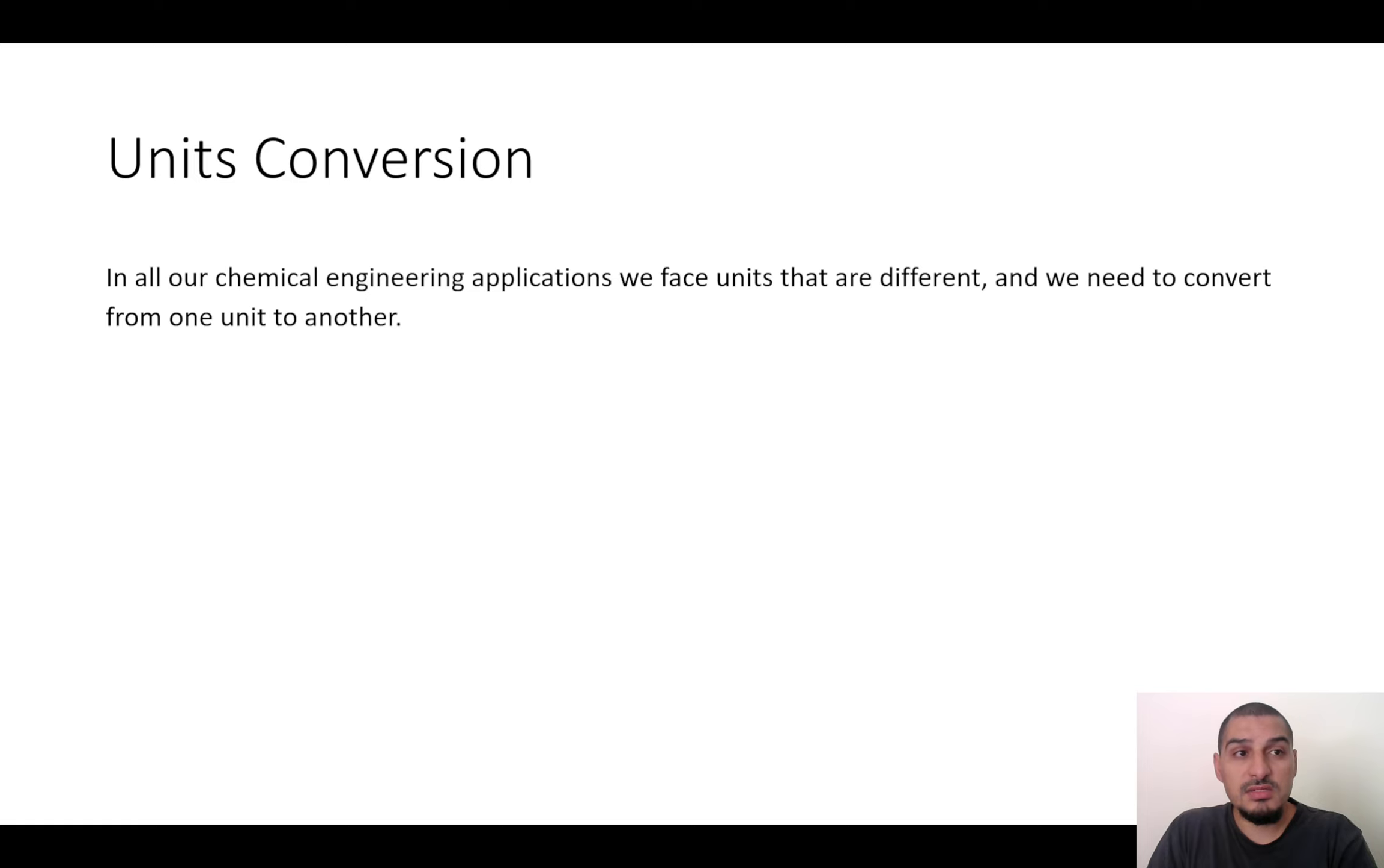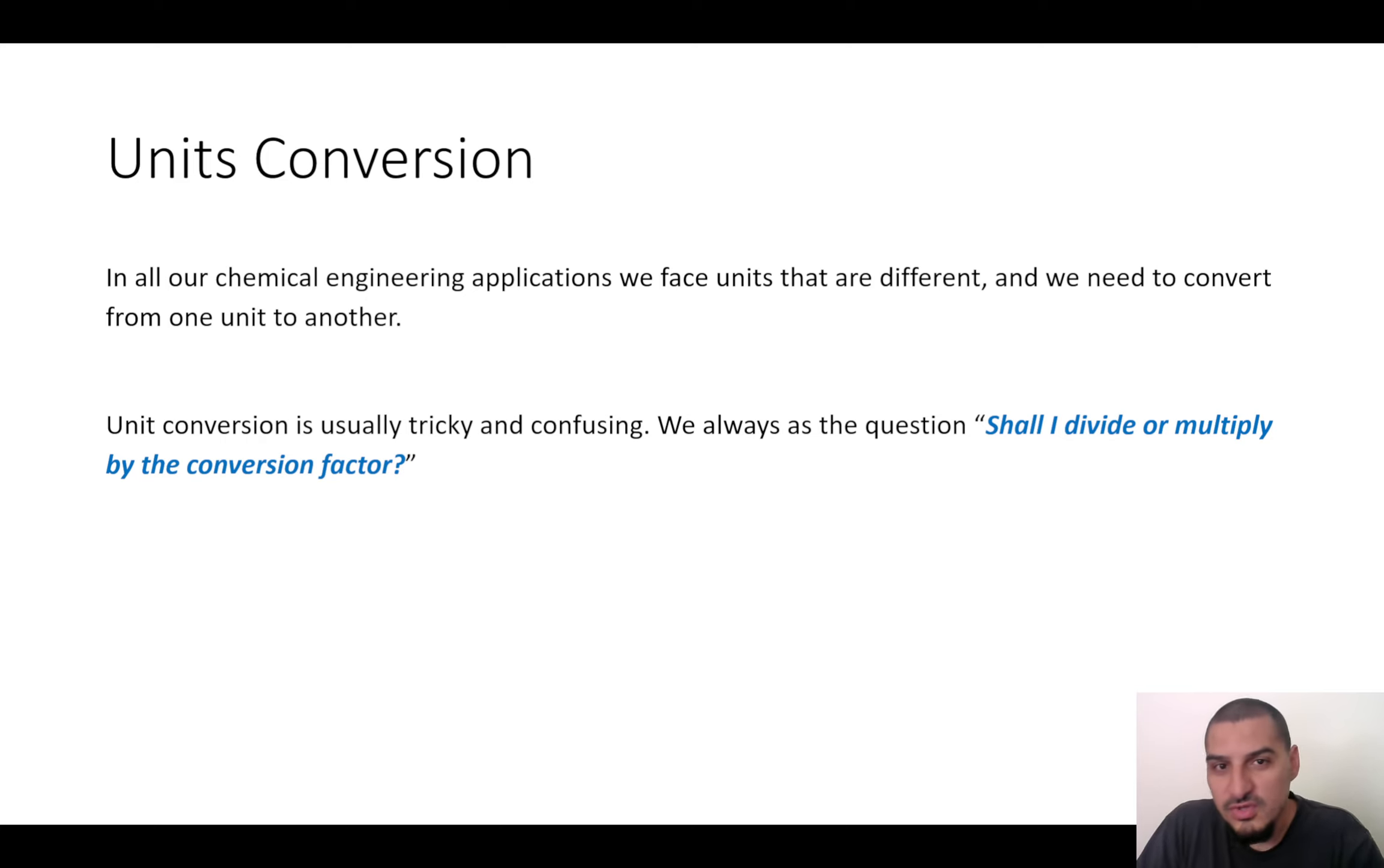And when you go through this unit conversion, the tricky part is how can you do this conversion? And this can be expressed in this question. Shall I divide or multiply by the conversion factor? Given that you know the conversion factor and assuming that you know the conversion factor, it's sometimes a tricky question is shall I divide by a thousand or multiply by a thousand?